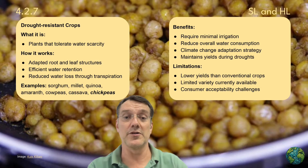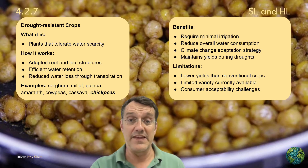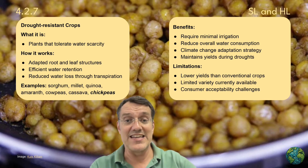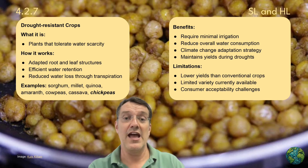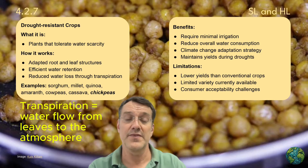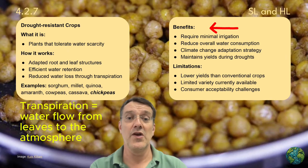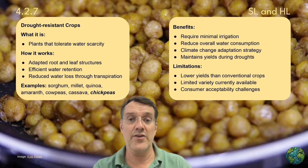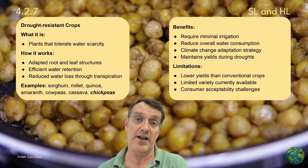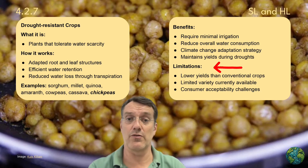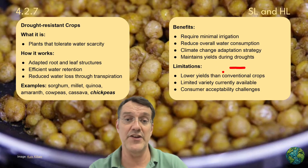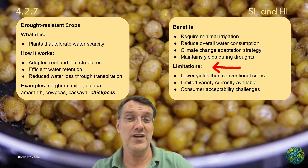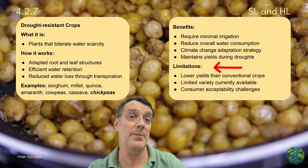Drought-resistant crops represent a biological approach to agricultural water conservation. These plants — including sorghum, millet, quinoa, amaranth, cowpeas, cassava, and chickpeas — have adapted root and leaf structures that enhance water retention and reduce losses from transpiration. Benefits include minimal irrigation requirements that reduce overall water consumption, resilience in the face of changing climates, and maintaining yields during periodic droughts. Limitations include generally lower yields per area than conventional water-intensive crops, limited variety currently available on the market, and consumer acceptance challenges when introducing unfamiliar crops to different markets.